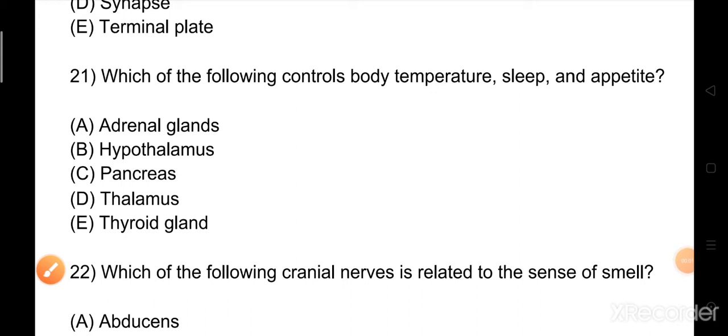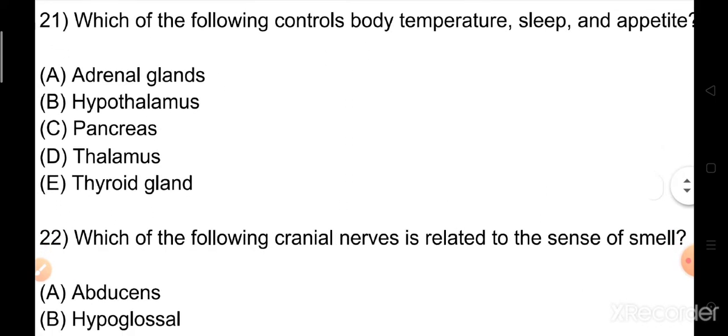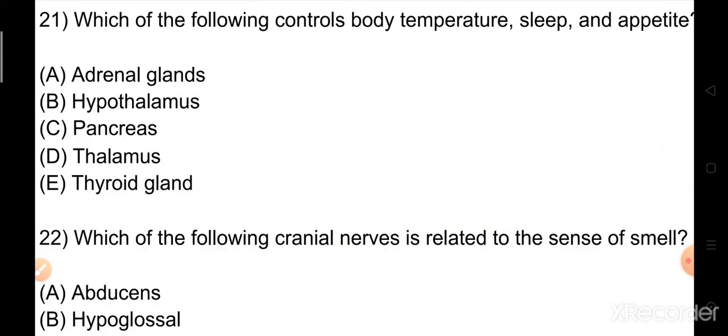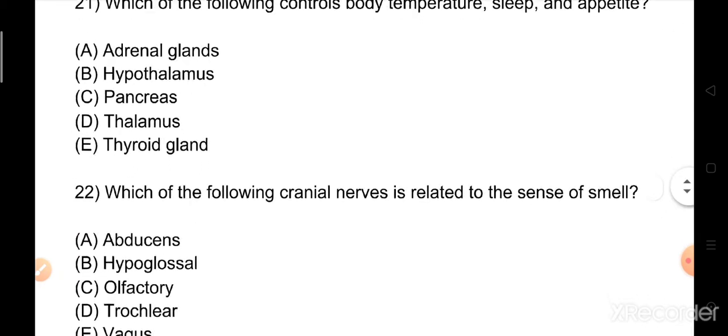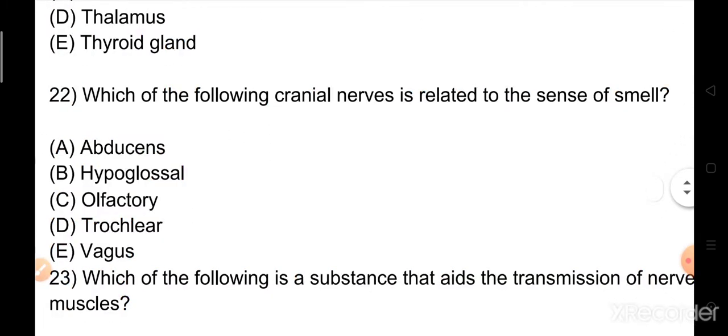Welcome back to previous year question paper of OSSC nursing official exam. Question number 21: Which of the following controls body temperature, sleep, and appetite? Options: A) adrenal glands, B) hypothalamus, C) pancreas, D) thalamus, E) thyroid gland. The right answer is option B, hypothalamus.